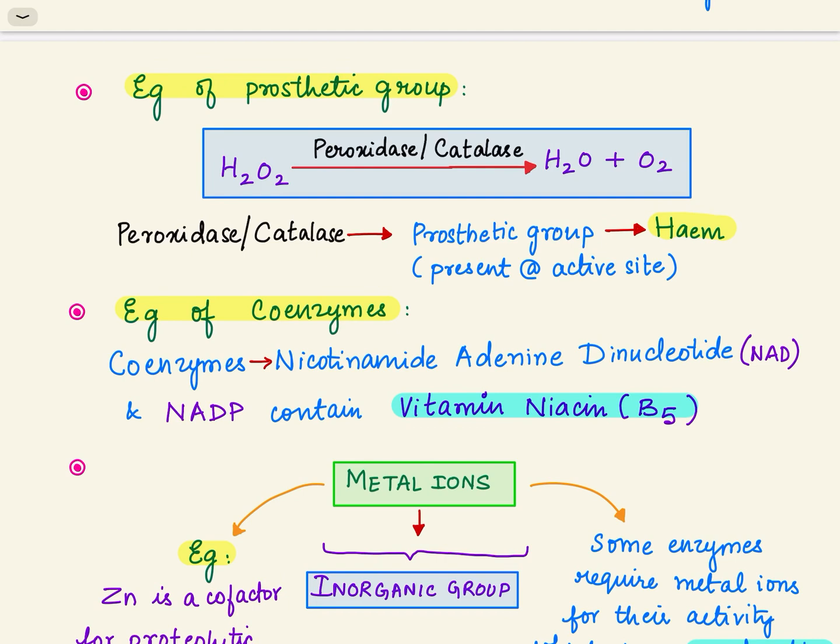The examples for coenzymes are nicotinamide adenine dinucleotide (NAD) and NADP, and these mainly contain vitamins. The example here in NAD and NADP is vitamin B5 or niacin.